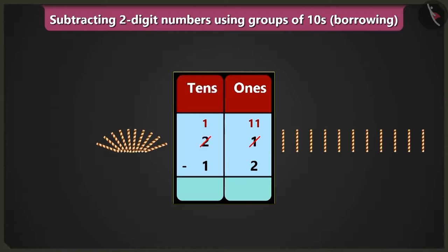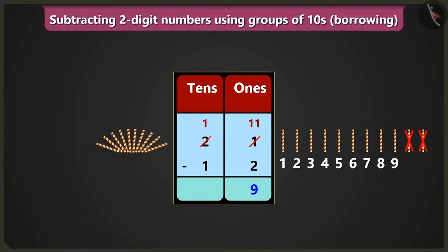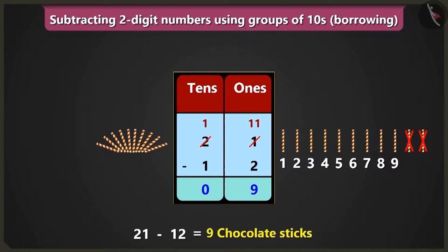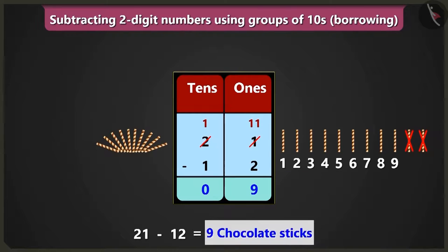And now, first of all, if we subtract two ones from eleven, then we will be left with one, two, three, four, five, six, seven, eight and nine in the place of ones. Now, if we subtract one ten from one ten in the box of tens, we will get zero. Twenty-one minus twelve is equal to nine. So Bunty would have nine chocolates in his share.